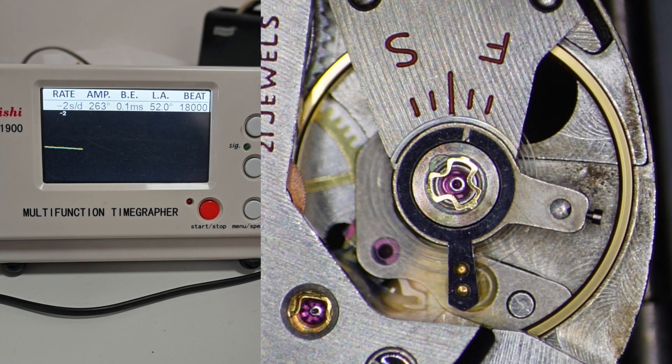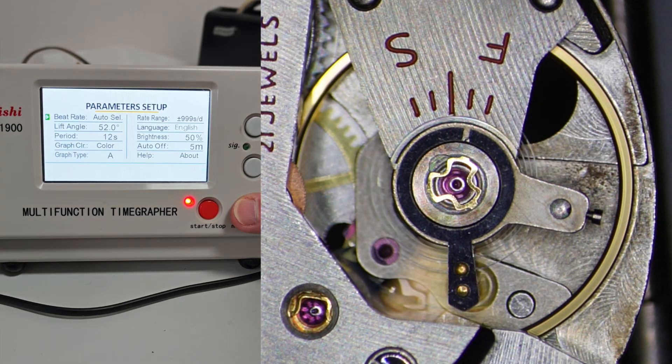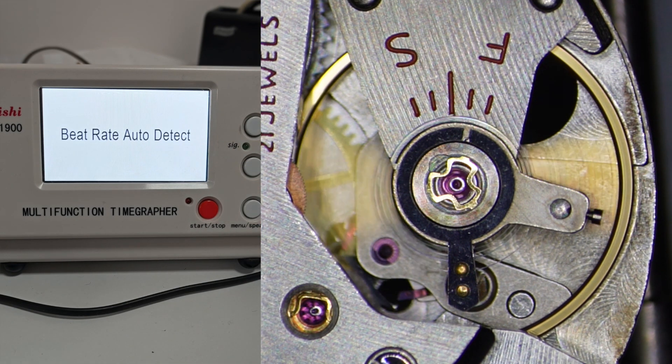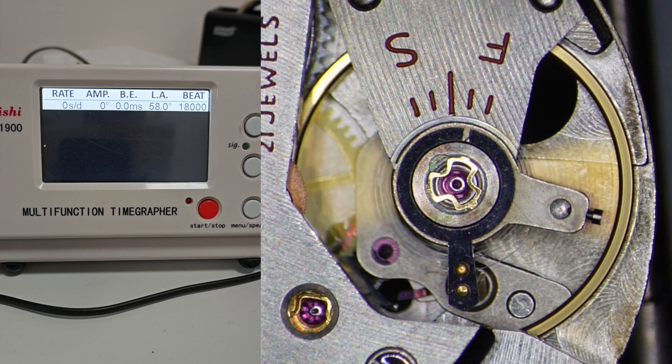We then go back to the timegrapher and gradually increase the lift angle until the displayed amplitude on the timegrapher is the same as the measured amplitude. In this case, we can see that we achieve an amplitude of 293 degrees by setting the lift angle of the timegrapher to 58 degrees.